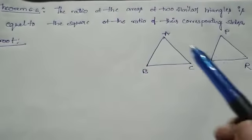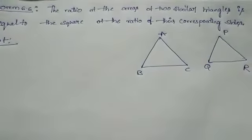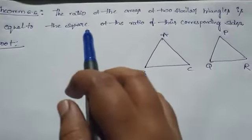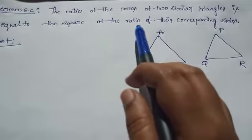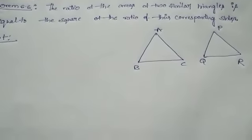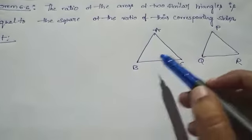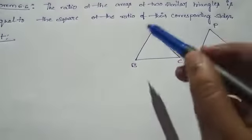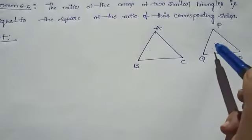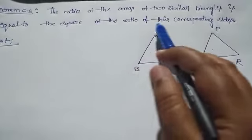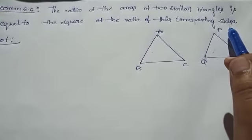Let's discuss one theorem. See the statement: the ratio of the areas of two similar triangles is equal to the square of the ratio of their corresponding sides. Here, given these two triangles are similar, and the area of these two triangles equals the square of the ratio of their corresponding sides.